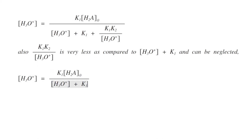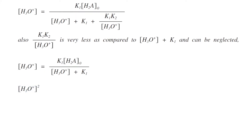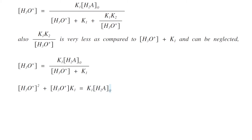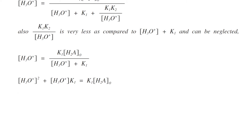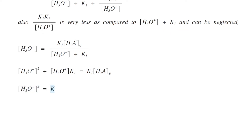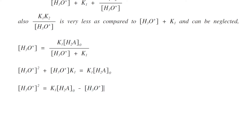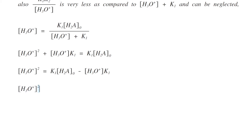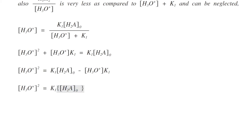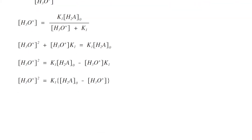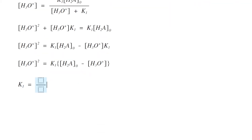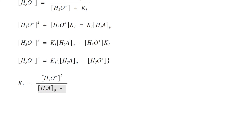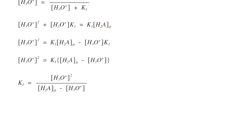Rearranging this equation: [H3O⁺]² + K1[H3O⁺] equals K1[H2A]₀, therefore [H3O⁺]² equals K1([H2A]₀ − [H3O⁺]). So K1 equals [H3O⁺]² divided by ([H2A]₀ − [H3O⁺]). This is equation number seven.